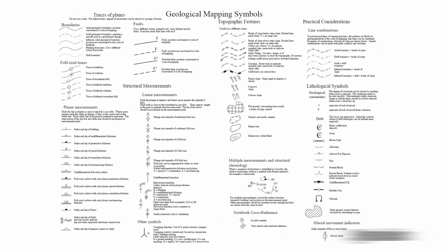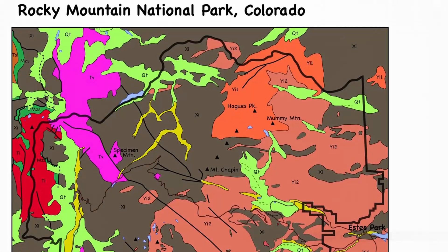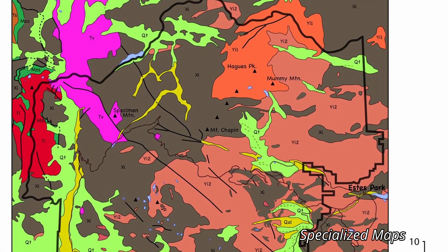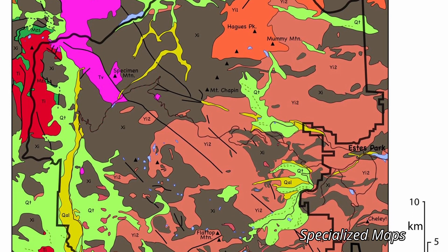Geologic maps also contain symbols representing geometric elements collectively known as geologic structures. These include faults, joints, fractures across which very little movement has occurred, aligned prismatic or platy mineral crystals known as lineations or foliations, and strata that have been tilted or folded in response to stresses within Earth's crust.